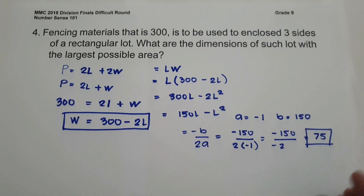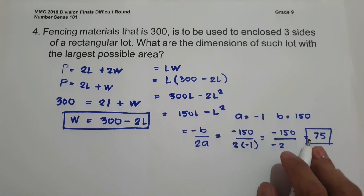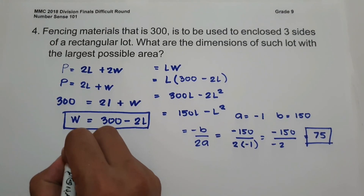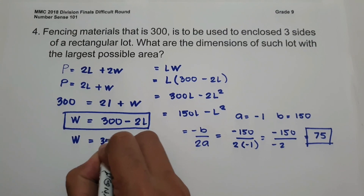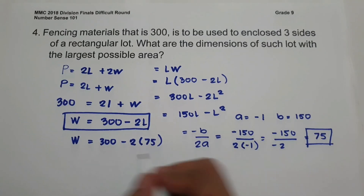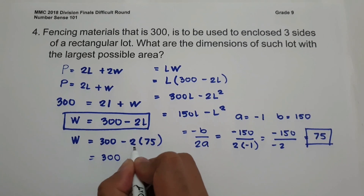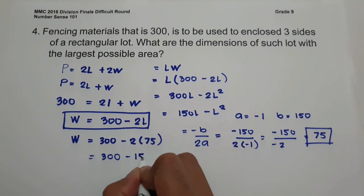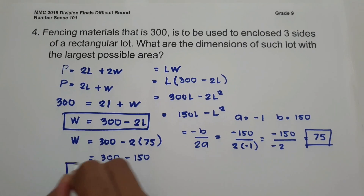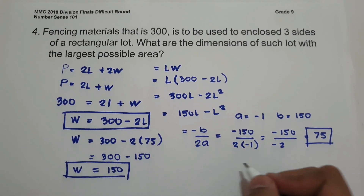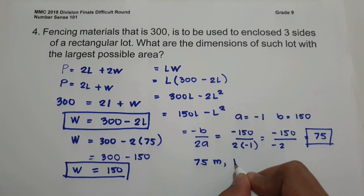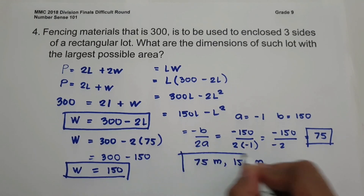One dimension of the rectangle is L = 75 meters. Substituting to find W: W = 300 − 2 × 75 = 300 − 150 = 150 meters. So the dimensions of the lot are 75 meters by 150 meters.